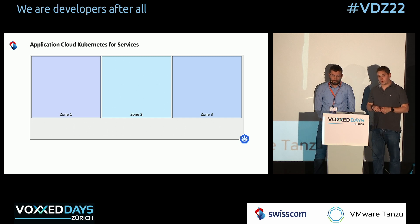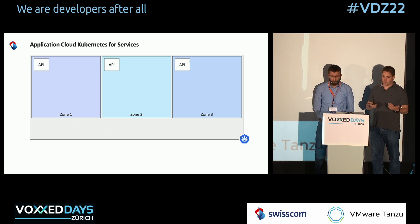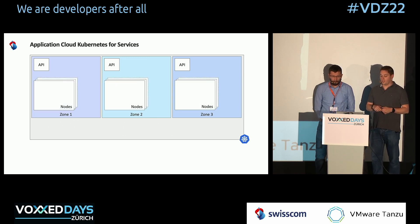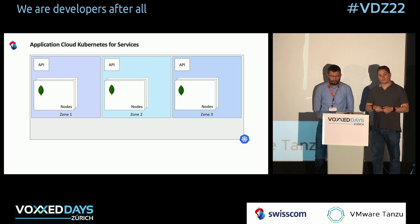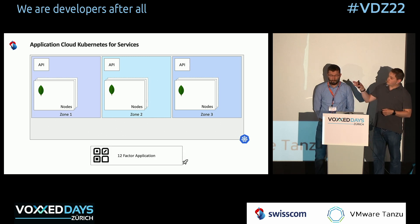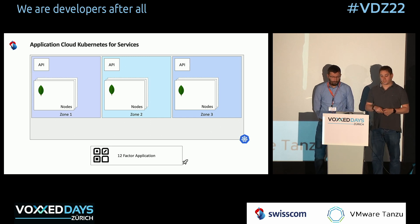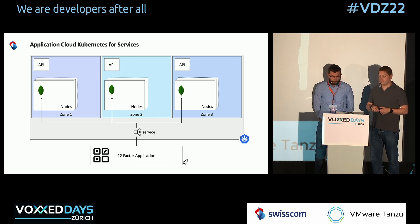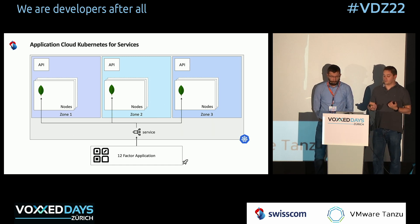We do that based on best practices: three zones in three data centers, a couple of API nodes, a couple of worker nodes. You deploy MongoDB, for example, on top — the HA set is called the replica set, you link them together. On the bottom, we have our 12-factor platform — Cloud Foundry platform as a service — and we simply expose these database services and consume them from that external platform.